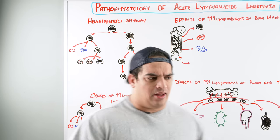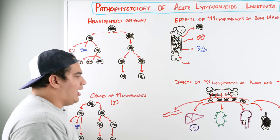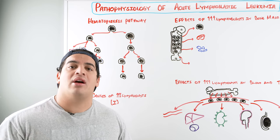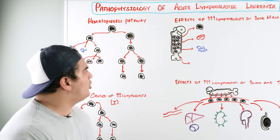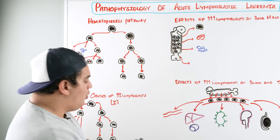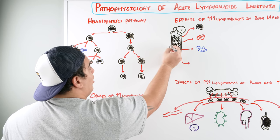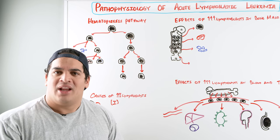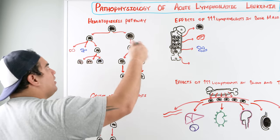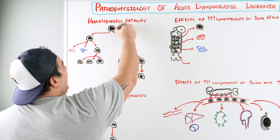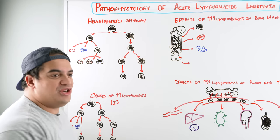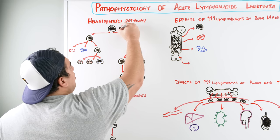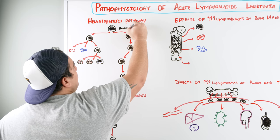With ALL, or acute lymphoblastic leukemia, the problem is within hematopoiesis — the production of all blood cells, which occurs in the red bone marrow. We zoom into the bone marrow and look at cellular division. There is a stem cell that generates all blood cells, called the pluripotent stem cell or hemocytoblast.